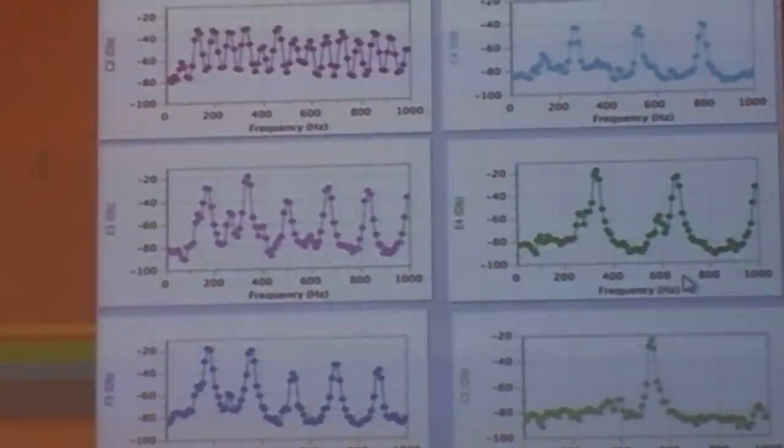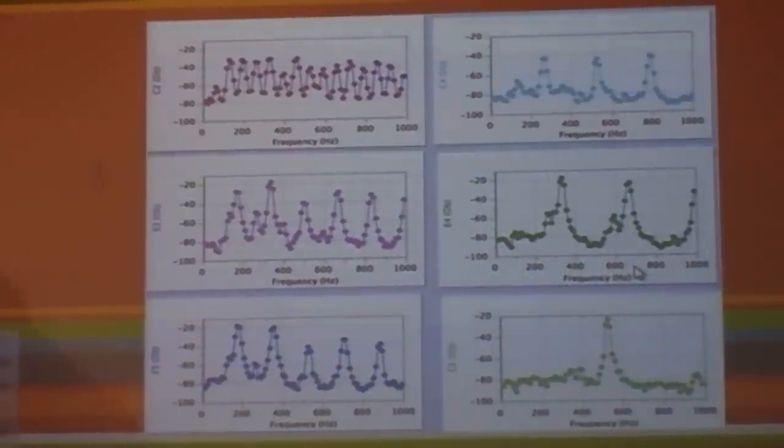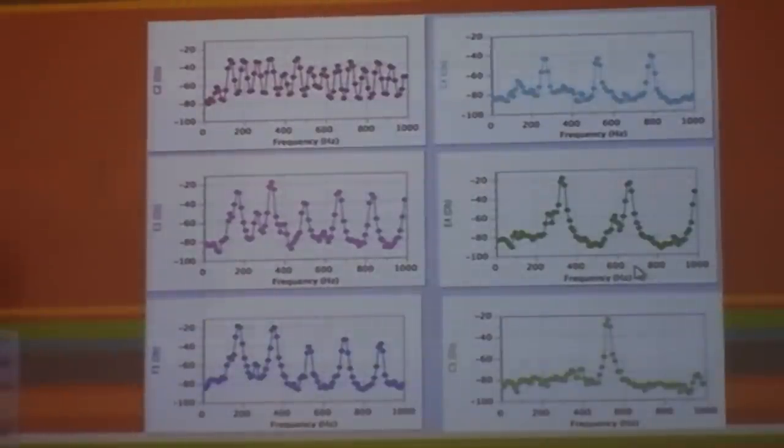So here we have six different notes and the first peak is the fundamental frequency that was being played and then the next peaks are the overtones that resonate. And so the lower notes have more peaks, so they have more overtones that were resonating than the higher notes.